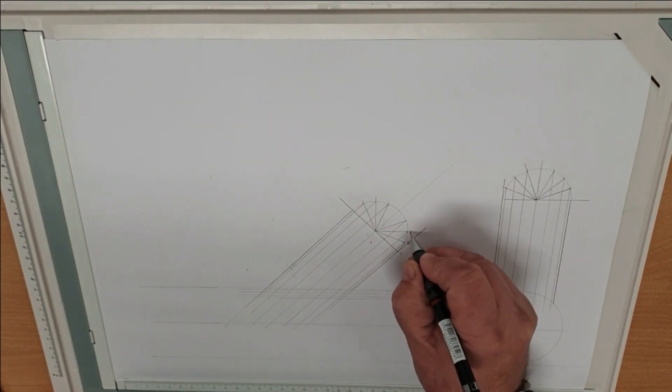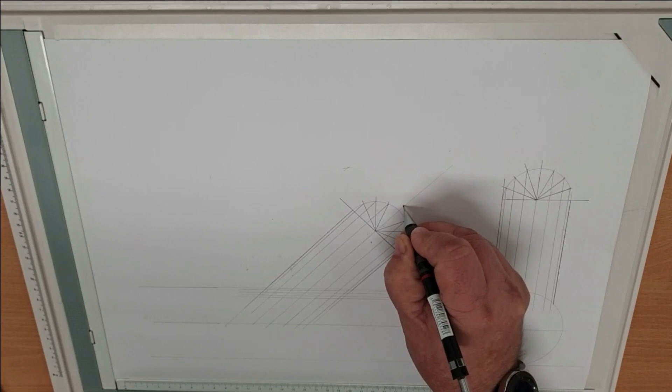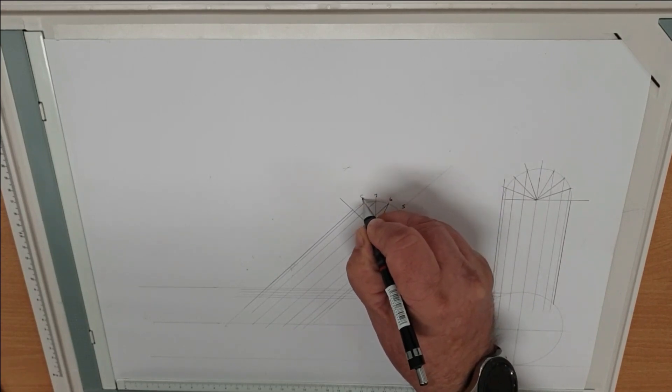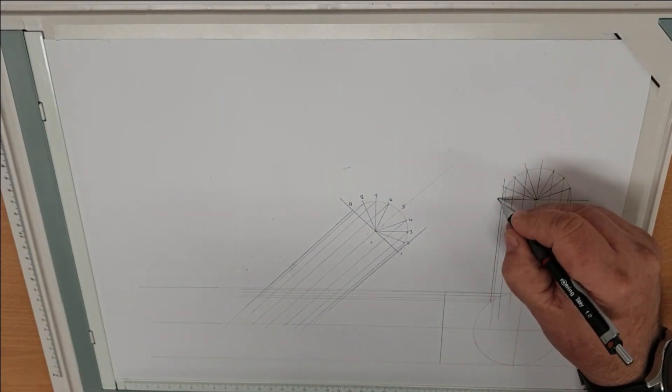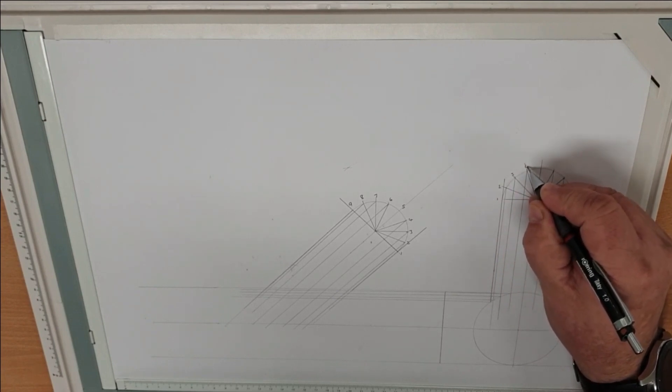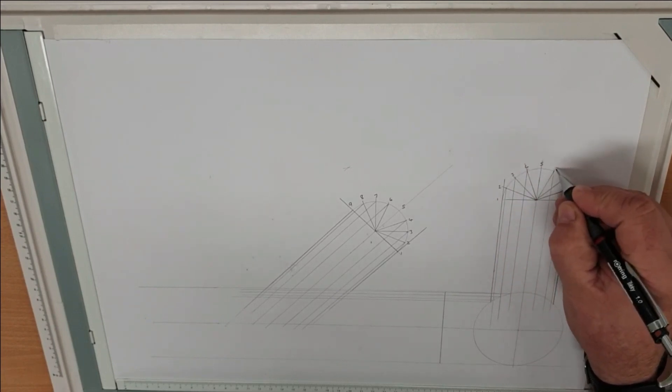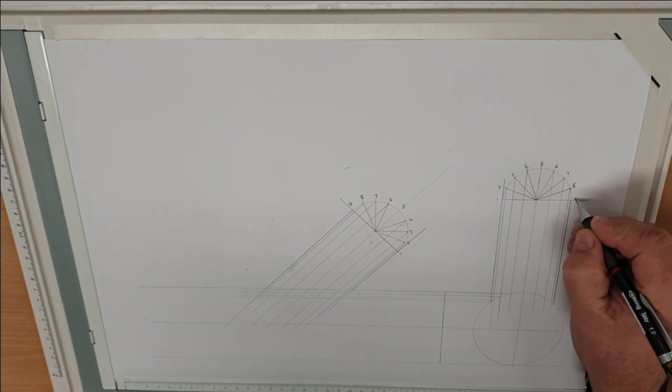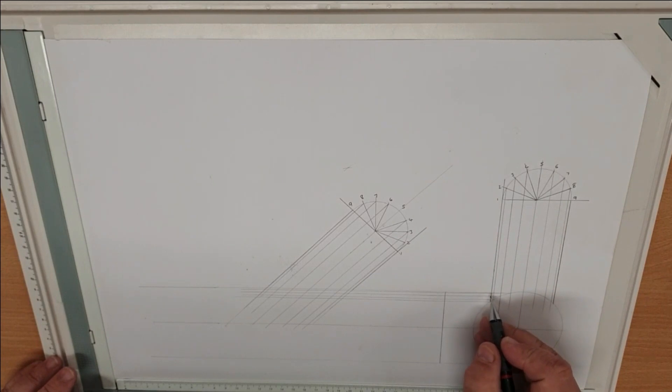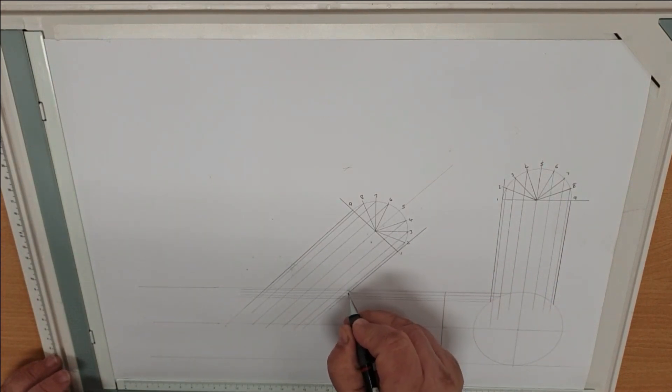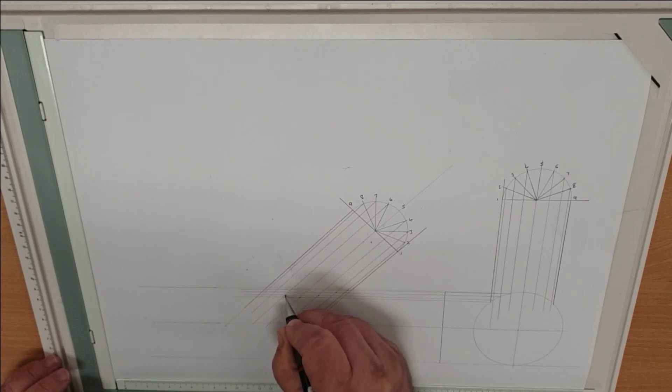Then remembering to number our intersection lines so that when we draw our pattern, we don't get confused on where our points are. So we're now plotting our points from the top - one, two, three, and so on - working our way all the way around.